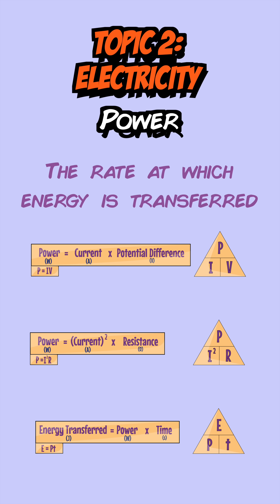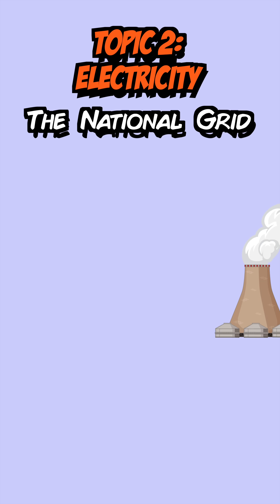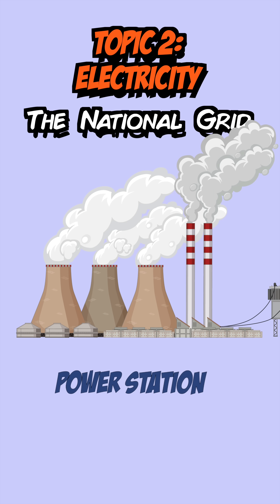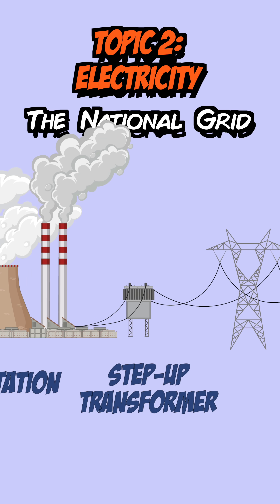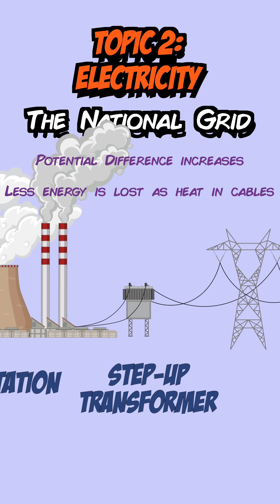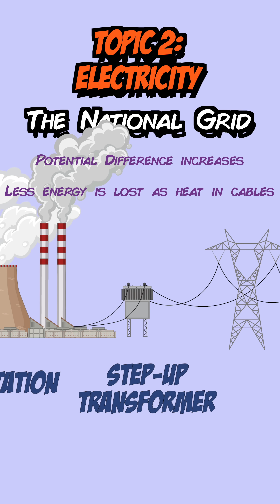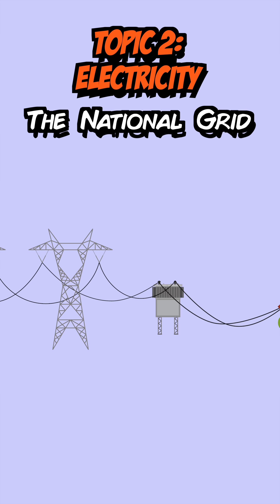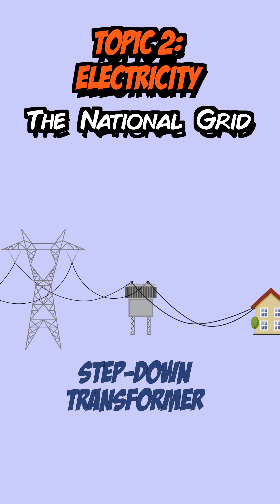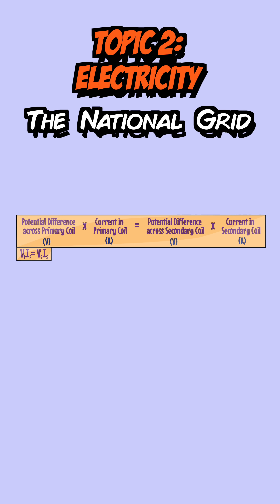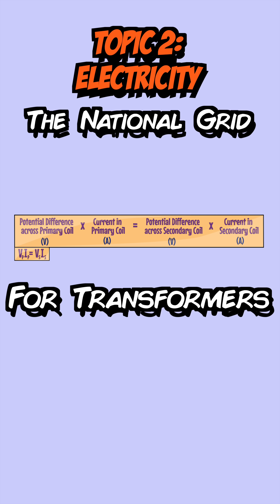Power is the rate at which energy is transferred, and electrical power can be found using three equations. The final part of this topic is all about the national grid, where electricity leaves the power station and passes through a step-up transformer, where its potential difference is increased so that less energy is lost as heat in the cables. It is then distributed around the country and goes through a step-down transformer for safety before reaching your home. There's also an equation for transformers that helps you work out the current and potential difference going in and out of a transformer.